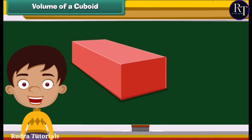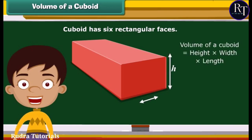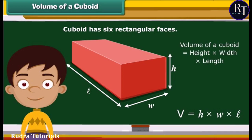Look at this closed box. This is a cuboid which has six rectangular faces. Its volume is calculated as height into width into length. Or simply, volume equals H into W into L.